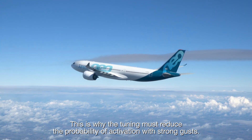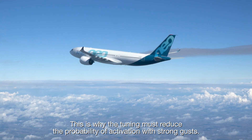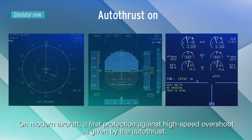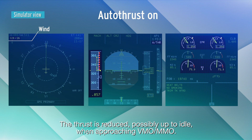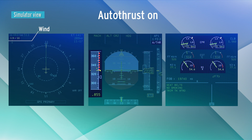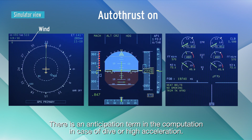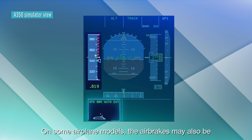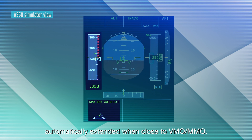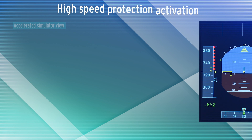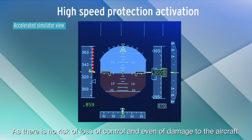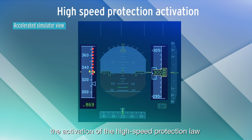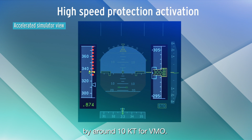This is why the tuning must reduce the probability of activation with strong gusts. On modern aircraft, a first protection against high speed overshoot is given by the autothrust — the thrust is reduced, possibly up to idle, when approaching VMO/MMO, with an anticipation term in the computation in case of dive or high acceleration. On some airplane models, the airbrakes may also be automatically extended when close to VMO/MMO. As there is no risk of loss of control or even damage when slightly exceeding VMO or MMO, the activation of the high speed protection law is delayed above VMO and MMO by around 10 knots for VMO.